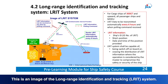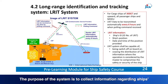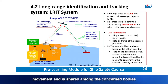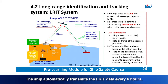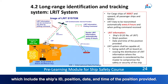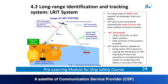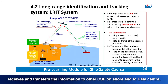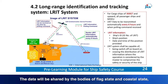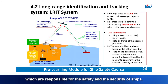The Long Range Identification and Tracking (LRIT) system collects information regarding ships' movement and shares it among bodies relating to the safety and security of ships. The ship automatically transmits LRIT data every six hours, including the ship's ID, position, date and time. A Satellite Communication Service Provider (CSP) receives and transfers the information to other CSPs onshore and to a data centre. The data is shared by Flag State and Coastal State bodies responsible for the safety and security of ships.